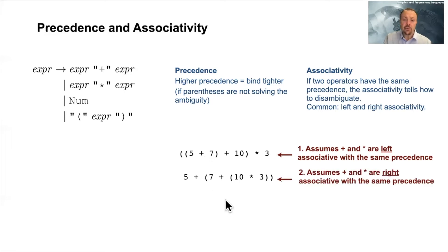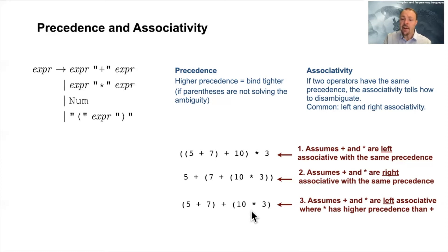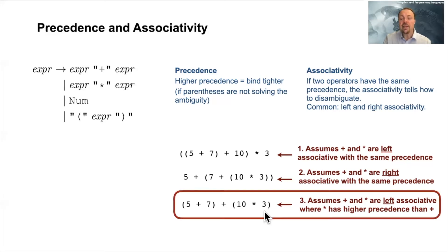In this example, instead we have right associativity, so it will evaluate first the expressions to the right and then go to the left. And the final one here is actually a mixture: we also have left associativity, where 5 plus 7 is evaluated first, but we can also see that 10 multiplied by 3 is done first. This means that multiplication had higher precedence — and this is really what we want when writing a normal expression with multiplication and addition, as we do in high school math.